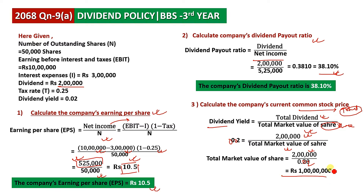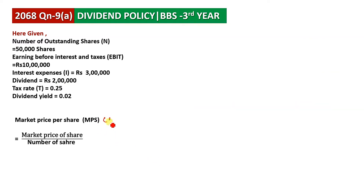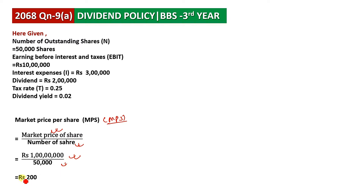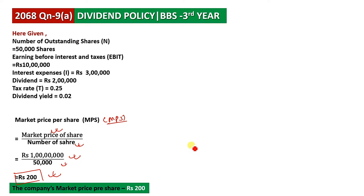The total market value of shares is 1 crore (10,000,000). The current common stock price, or market price per share (MPS), equals total market value divided by number of shares — which is 1 crore divided by 50,000. Therefore, the company's market price per share is 200 rupees.